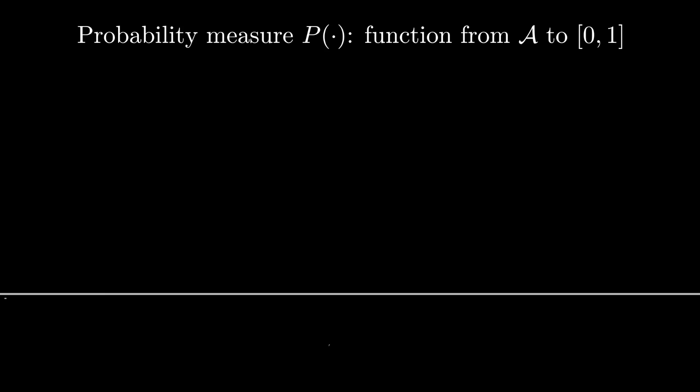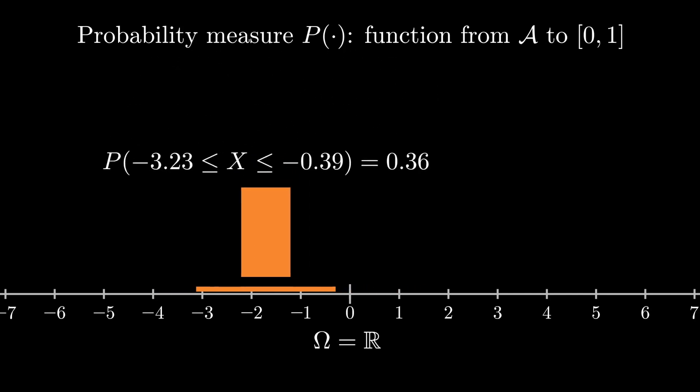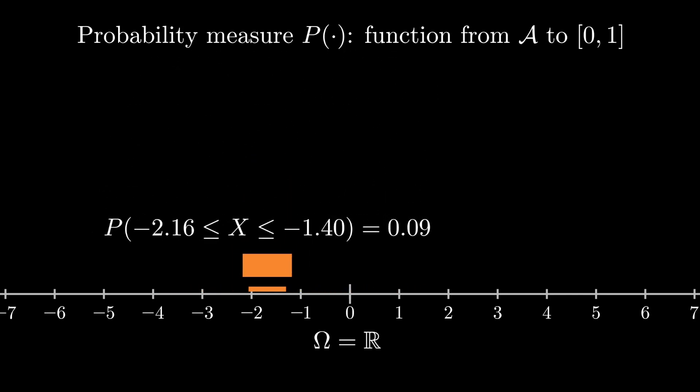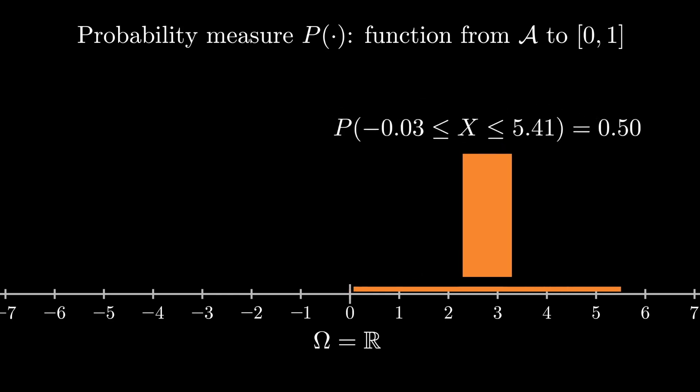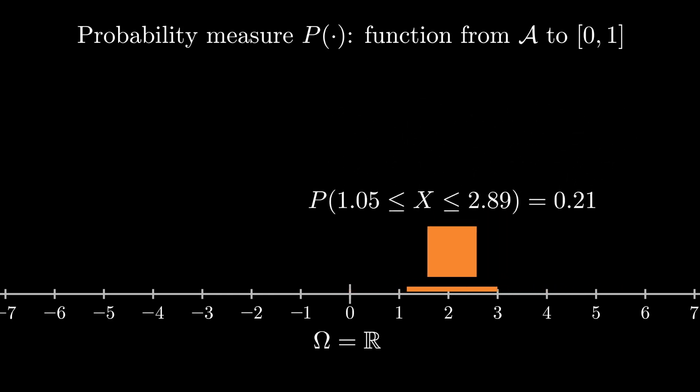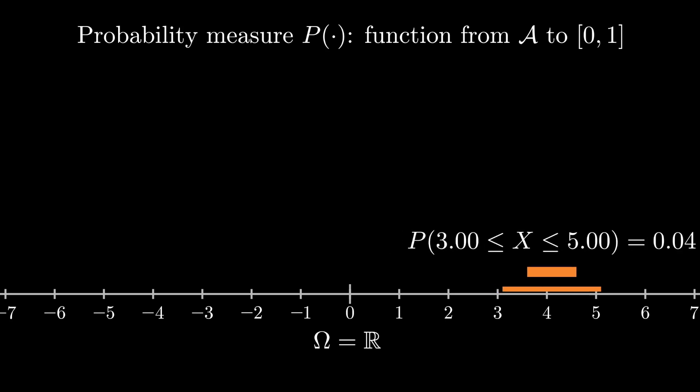The situation in a continuous sample space is of course a bit more complicated. Here we need some kind of function that can take any well-behaved subset of omega and produce a number between 0 and 1. Here I'm showing an example of such a measure as I take a bunch of intervals along the number line and produce a number between 0 and 1. Behind the scenes here, I'm just using an arbitrarily chosen cumulative distribution function.